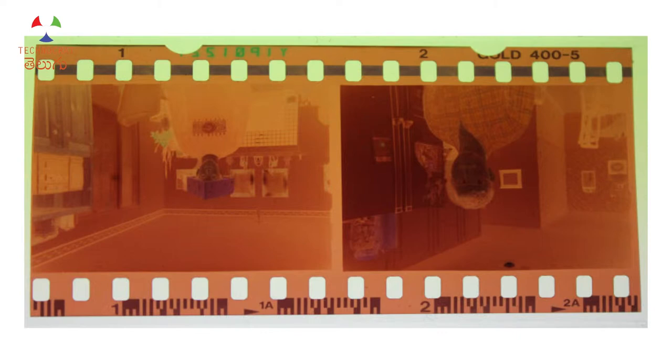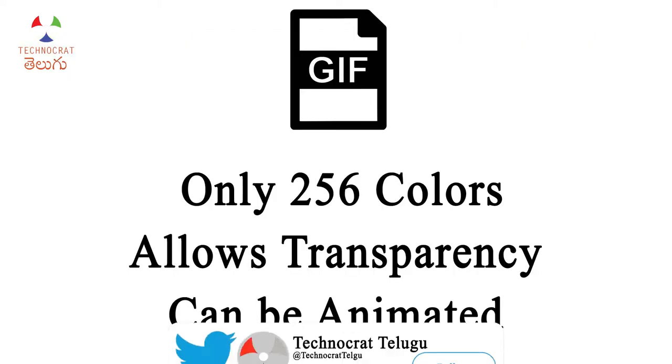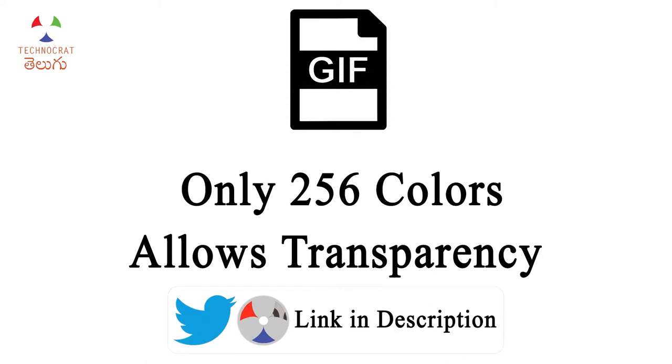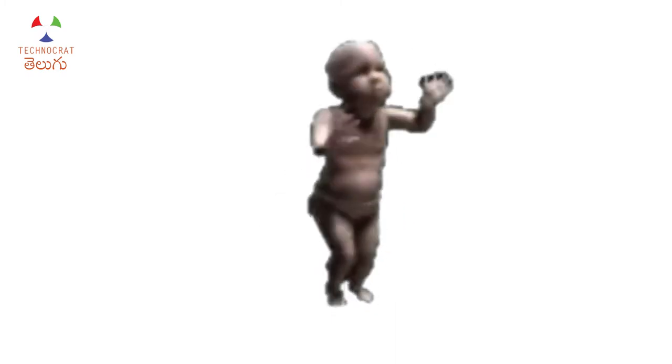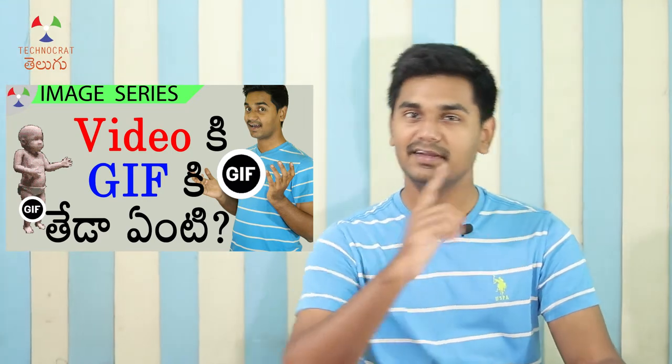In the RAW image file format, the file is a digital negative. In the GIF file format, there are only 256 colors. GIF can support a transparent scene and can also create animations. This image format can make a movement — it is like a separate short video. GIF is used for icons and simple animations.